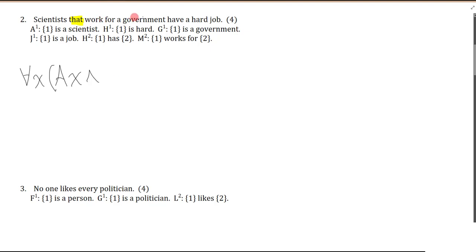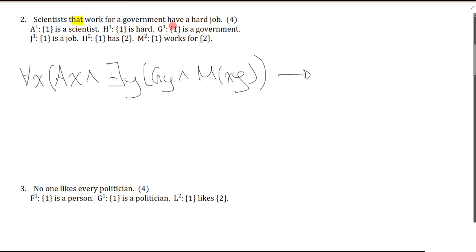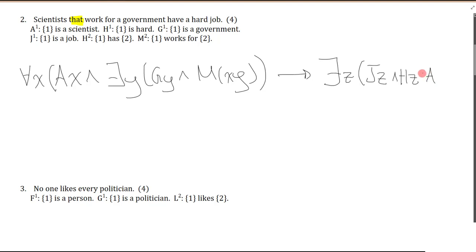Do the scientists have to work for all governments or some government? It's some — there is a government, and X works for this government. If this is the case, then they have a hard job. So there is a job — I'll switch to Z — there is a job that is hard, and my scientist has it: X has Z. Just close the brackets and we're done.